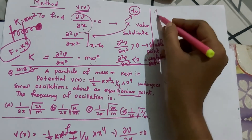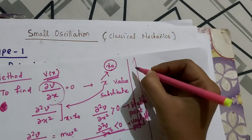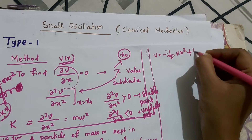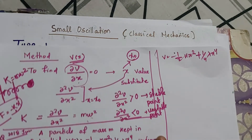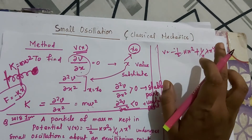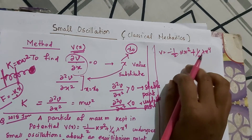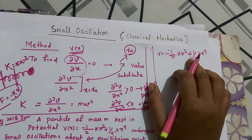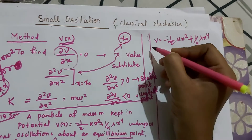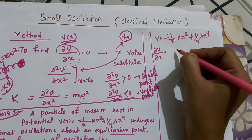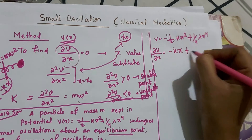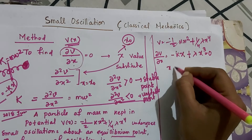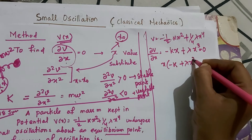Computing the derivative: ∂V/∂x = −kx + λx³. Setting this equal to zero and factoring out x gives: x(−k + λx²) = 0. This same question appeared previously in CSIR-NET — once asking about the time period and another time asking about the phase diagram.